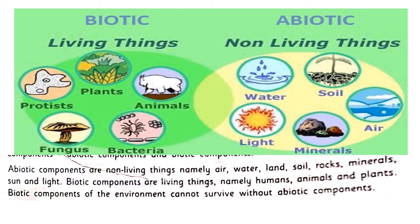Abiotic components are non-living things like air, water, land, soil, rocks, minerals, sun, light and many more things. Biotic means things which have life — living things like humans, animals and plants. We all are biotic. Biotic components of the environment cannot survive without abiotic components. Biotic ones like human beings, animals and plants are totally dependent on abiotic components — we need water, land, soil, rocks, minerals and sunlight. Without abiotic components, plants, animals and human beings cannot survive. So we are interdependent on these components.